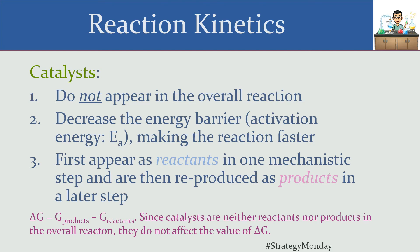When looking at a series of reactions that make up an overall reaction, the best way to spot a catalyst is that it first appears as a reactant, then gets reproduced as a product — it comes back out. That's why it doesn't appear in the overall reaction: it's on the reactant side in one step and the product side in a later step, and those two cancel out.